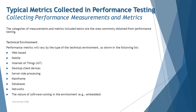The categories of measurements and metrics commonly obtained from performance testing are organized as follows, and these are K1-level points to remember. Beginning with the first category — the technical environment — performance metrics will vary by environment type, including web-based, mobile, Internet of Things, desktop client devices, server-side processing, mainframe, database, networks, and the nature of software running in the environment such as embedded systems. The technical environment plays a vital role in identifying which performance metrics must be used.